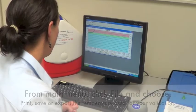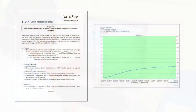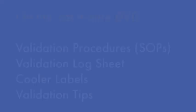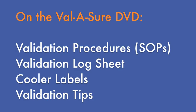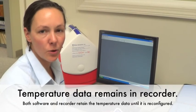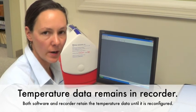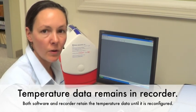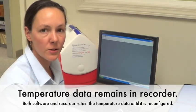And if you'd like, you can save it as well. Attach the temperature data printout to the validation procedure for your records. The cooler validation procedures, validation log sheet, and cooler validation label can be found on the Valashore DVD. The information in the recorder and the analyzer software will remain there until the recorder is reconfigured for another validation.